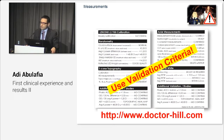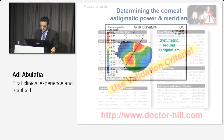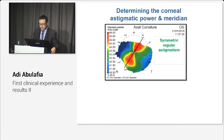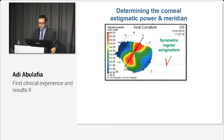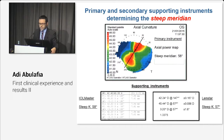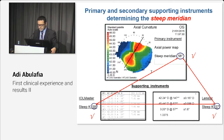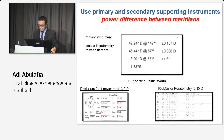It's also important to be critical when evaluating our measurements and not to fly on automatic pilot mode. Useful validation criteria are available on Warren Hill's website. Before we determine the corneal astigmatic power and meridian, it is best to assure that we are dealing with a symmetrical and regular astigmatism, and then it is advisable to follow Warren Hill's methodology by using primary and secondary supporting instruments to determine the steep meridian and the power difference between the meridians.